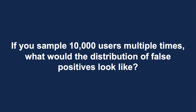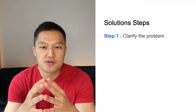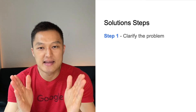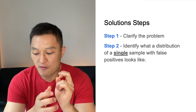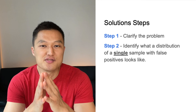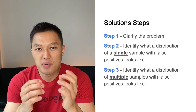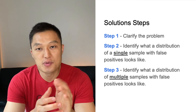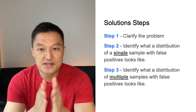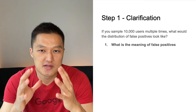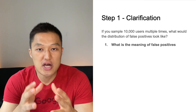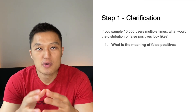Now let's go through the solution. If you sample 10,000 users multiple times, what would the distribution of false positives look like? To solve this, we think in steps. First, clarify the problem — there's some ambiguity. Second, identify what the distribution of a single sample with false positives looks like. Understanding a single sample of 10,000 users will help you understand the full question about multiple samples.